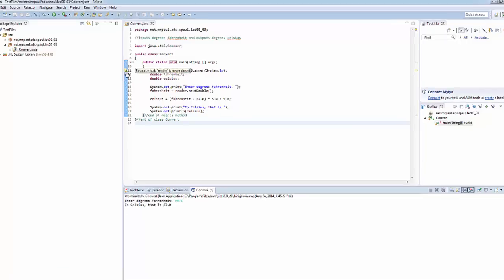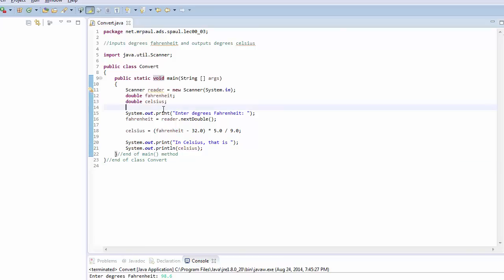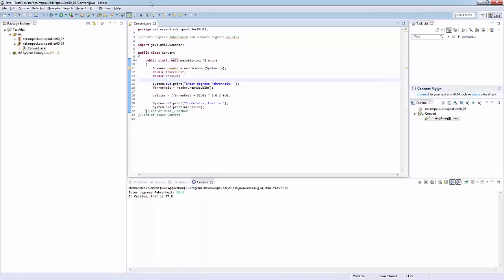One note right here. In this program, in Eclipse, it's going to give you a warning. This is not an error message. This is a warning. Resource leak. Reader is never closed. Don't worry about this for now. We can talk about it later, but don't worry about it. It's not a red x. It's the little exclamation point, so don't freak out over that.